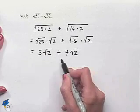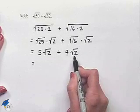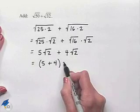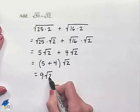And now that we have like radicals, we can think about this as factoring out the square root of 2, leaving us with 5 plus 4 multiplied times the square root of 2, giving us a result of 9 square root 2.